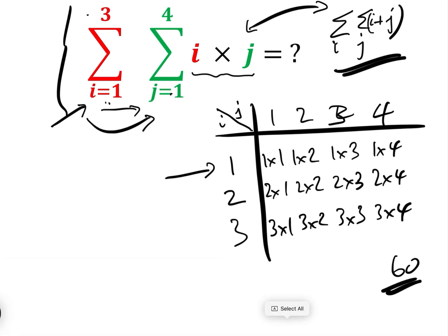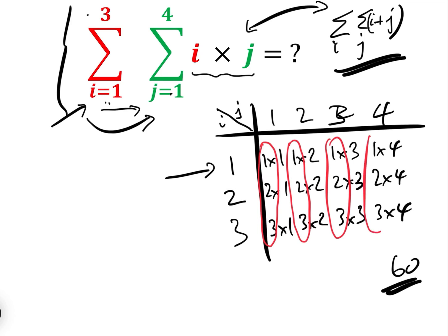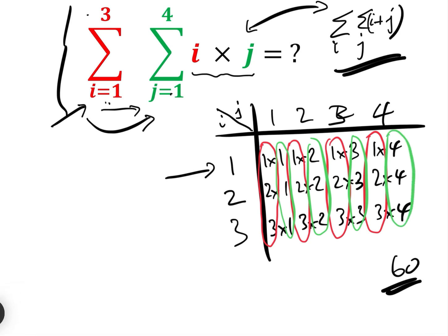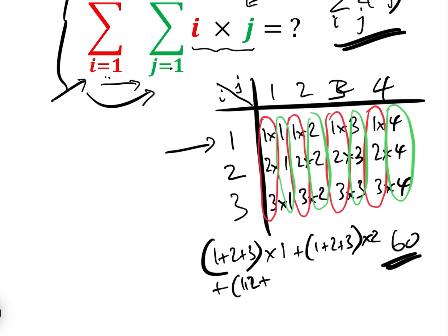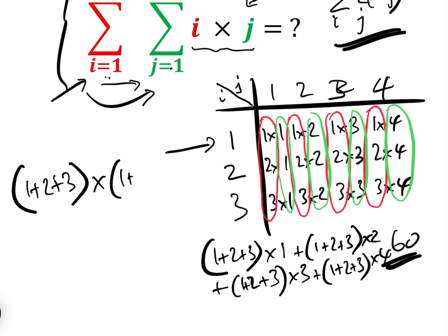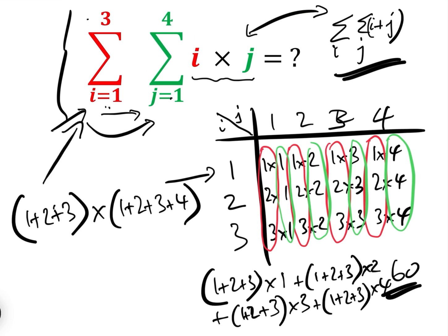Now let's use a different colour. If we look at 1, 2 and 3 appearing in each row, and in green we look at the column values 1, 2, 3 and 4, we can see that this sum is going to be: (1+2+3)×1 + (1+2+3)×2 + (1+2+3)×3 + (1+2+3)×4, which is the same thing as (1+2+3) × (1+2+3+4).